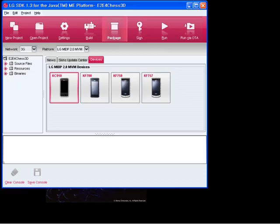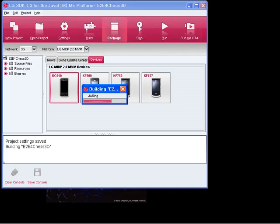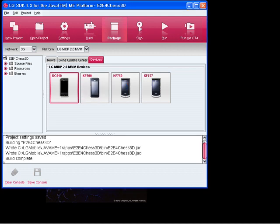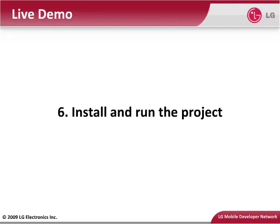To package the current project, click the Package button. The MIDlet suite descriptor and JAR file are generated and placed in the selected project's bin directory. To properly test a MIDlet suite, you should install it into the toolkit's emulator or a real device. When you press the Run button in the toolbar, the MIDlet suite is not installed into the emulator.